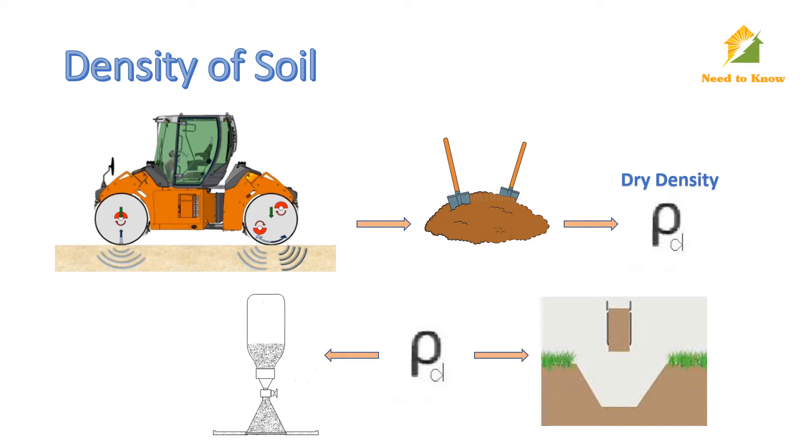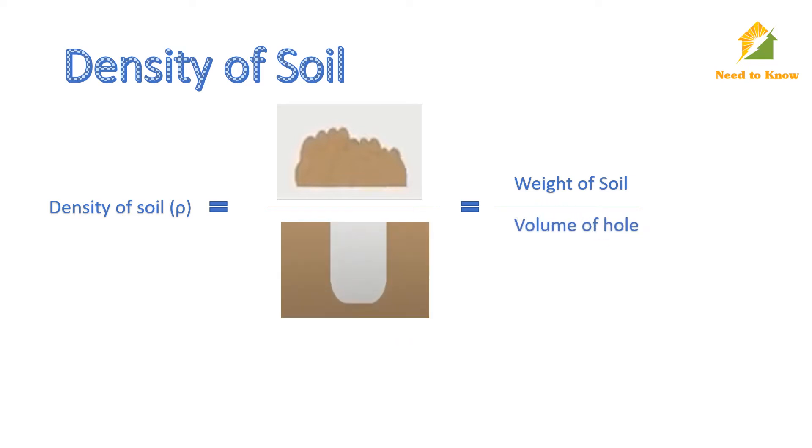In this lecture, we proceed for Sand Cone Method. Core Cutter Method will be discussed in the coming video. Sand Cone Method is a simple method in which we measure density of soil from the ratio of the weight of soil excavated from the compacted area to the volume of the excavated area. To find out the volume of the excavated hole, we use Sand Cone Apparatus.